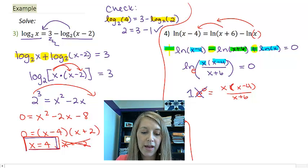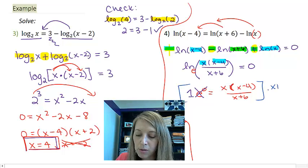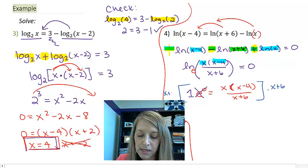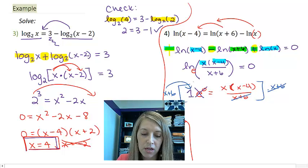This one's going to be really easy to simplify because I know anything to the 0 power is in fact 1. If I solve this one by using my magic trick, I can multiply both sides by x plus 6, which cancels that out.